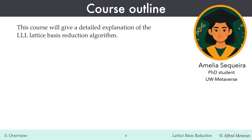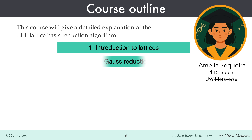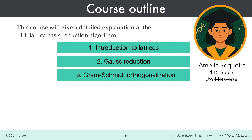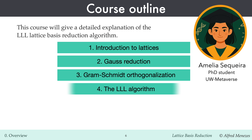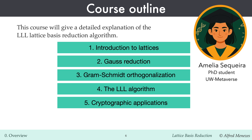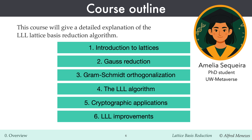This course provides a detailed explanation of the LLL lattice basis reduction algorithm. The first video is an introduction to lattices. The second video covers Gauss's algorithm, a classical method for finding a shortest basis for a two-dimensional lattice — the LLL algorithm is in some sense a generalization of Gauss's algorithm. The third video reviews the Gram-Schmidt orthogonalization process, the essential tool used in the design of LLL. The fourth video presents the LLL algorithm itself along with its analysis. The fifth video demonstrates how LLL can be used to attack the ECDSA signature scheme when partial information about per-message secrets are leaked. The sixth video concludes with a brief overview of the key improvements and refinements to LLL.